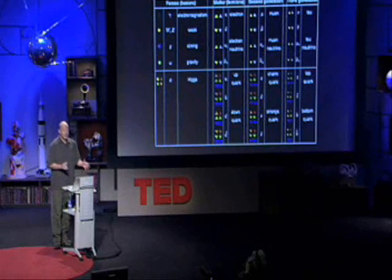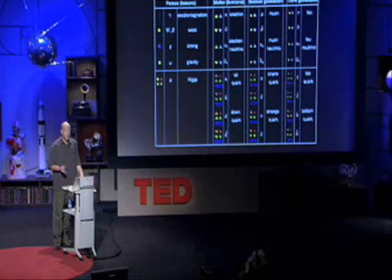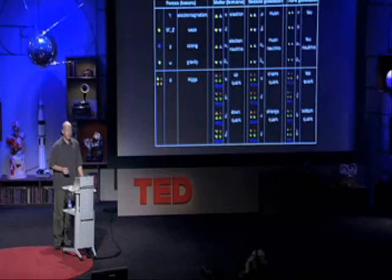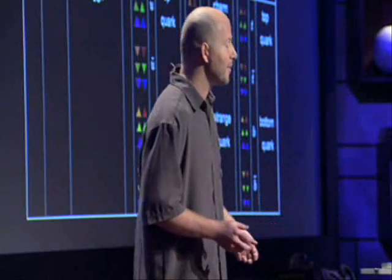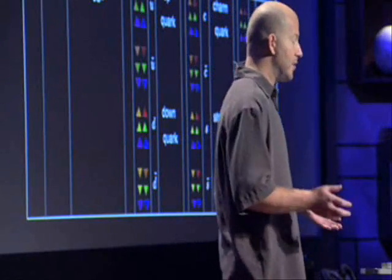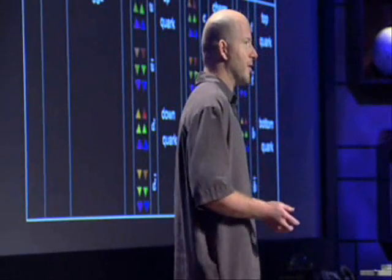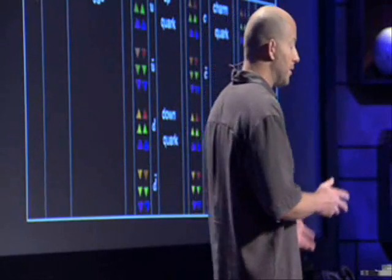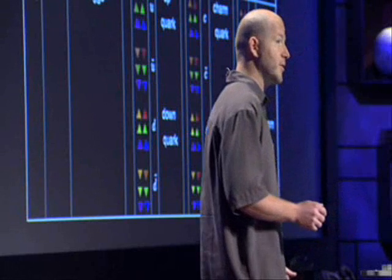Now, if we count up all these different particles using their various spins and charges, there are 226. That's a lot of particles to keep track of. And it seems strange that nature would have so many elementary particles. But if we plot them out according to their charges, some beautiful patterns emerge.